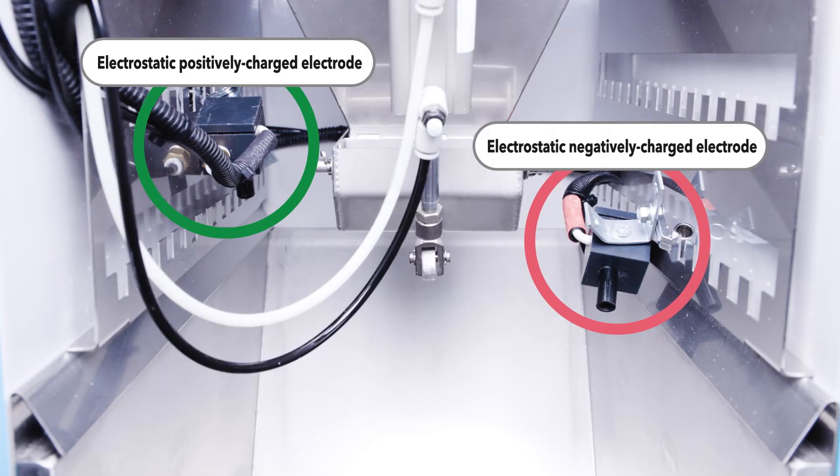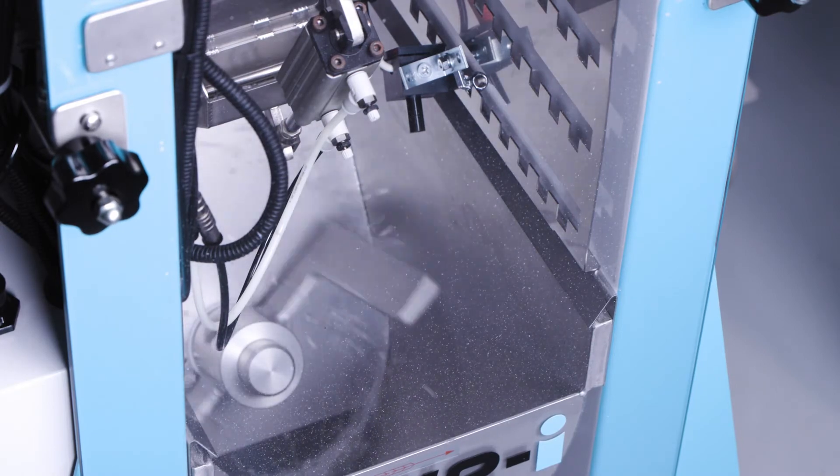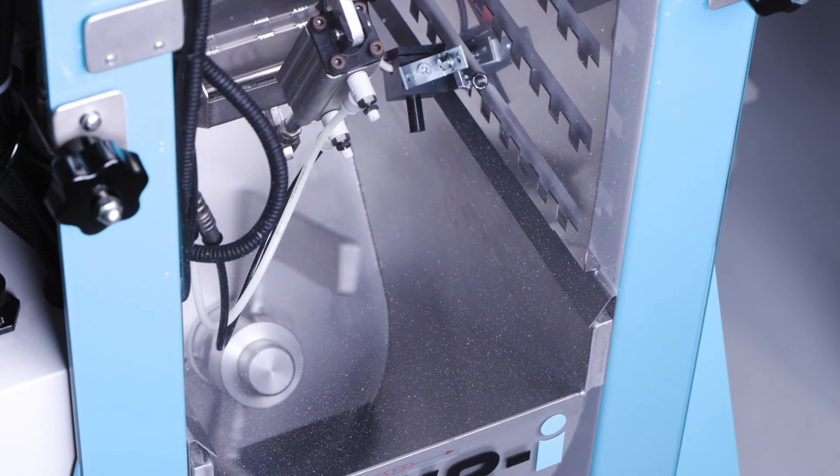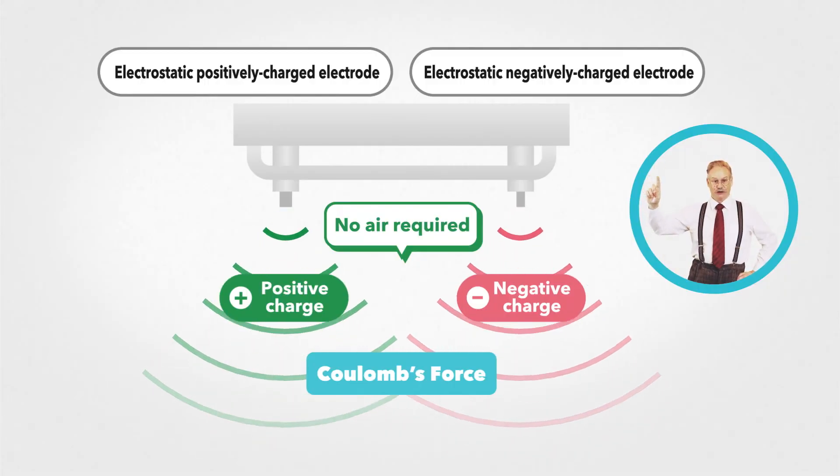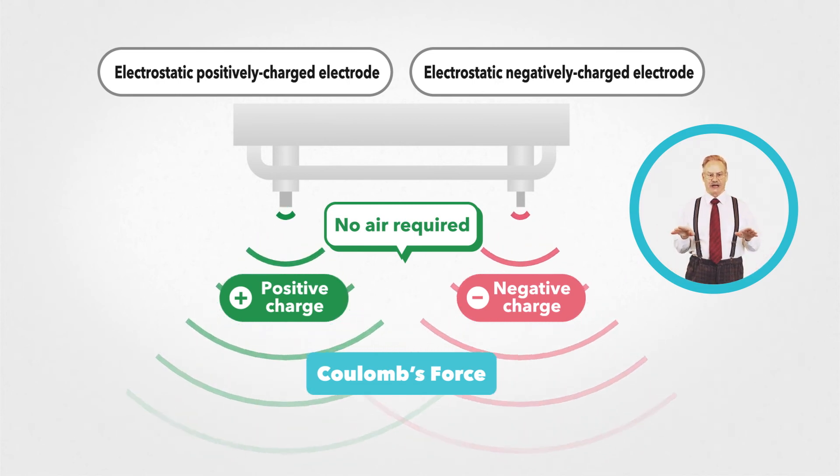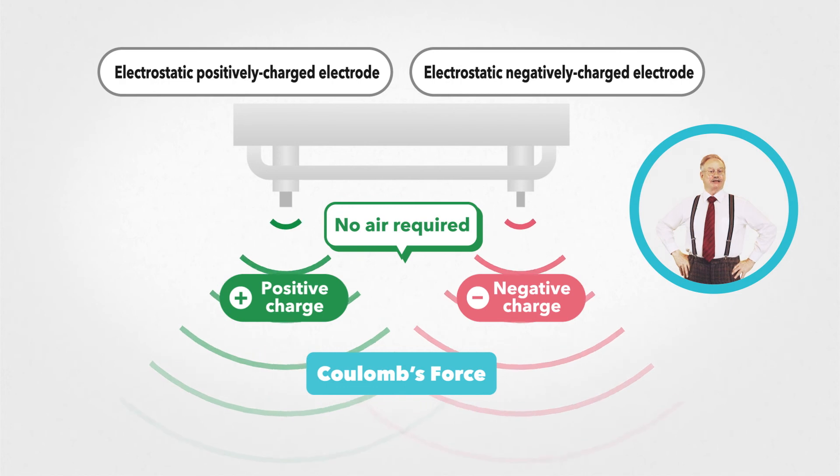For example, if a static eliminator is placed in a material blender, it will prevent contamination, separation when blending master batches, and reduce molding defects and uneven colors. Air is not used, so no dust is generated, making effective electrical neutralization possible.